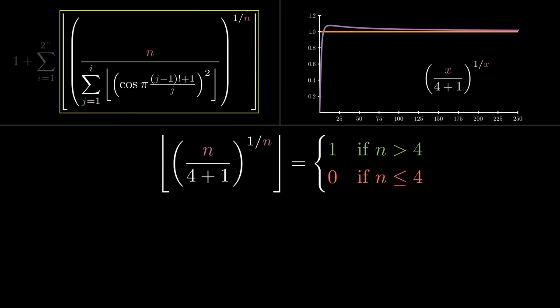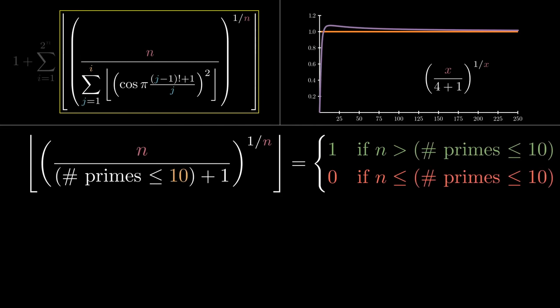The result is that we've just implemented an inequality using nothing but arithmetic. We have a detector for numbers that are greater than 4. It takes some thought, but you can check for yourself that when you change this 4 to other values, this equation still holds. In our current example, 4 is the number of primes up through 10. In general, this will be replaced by the number of primes up through i.